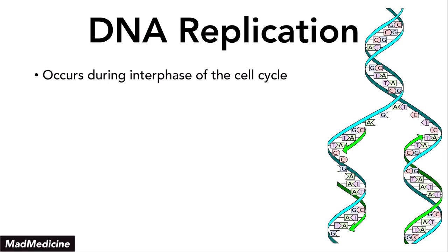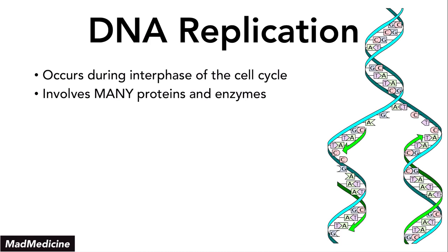Replication occurs in the interphase of the cell cycle — it's happening before the cell cycle actually begins because you need to replicate DNA before you can split the cell. It's going to involve a lot of proteins and enzymes. This is a very complicated process, and the way we are going to explain it is even simplified compared to what's actually happening — this is just for exam purposes.